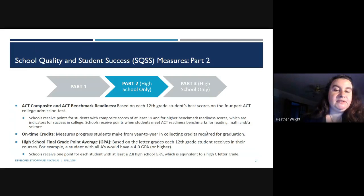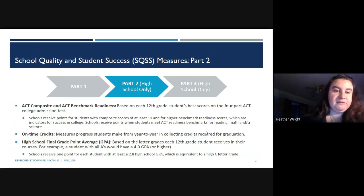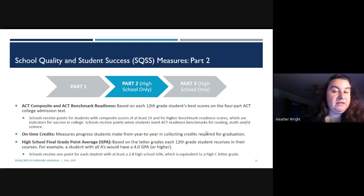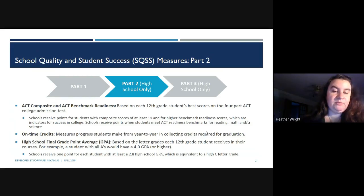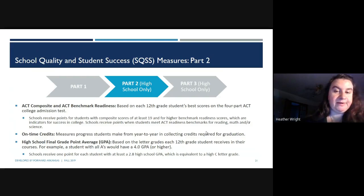Part two looks at the ACT composite and ACT benchmark readiness, based on each 12th grade student's best scores — they look at super scores. Schools receive points for students with composite scores of at least 19 and for higher benchmark readiness scores, which are indicators for success in college. Schools receive points when students meet ACT readiness benchmarks for reading, math, and/or science. It also looks at on-time credits — measuring progress from year to year — and high school GPA: schools receive one point for each student with at least a 2.8 GPA, equivalent to a high C.